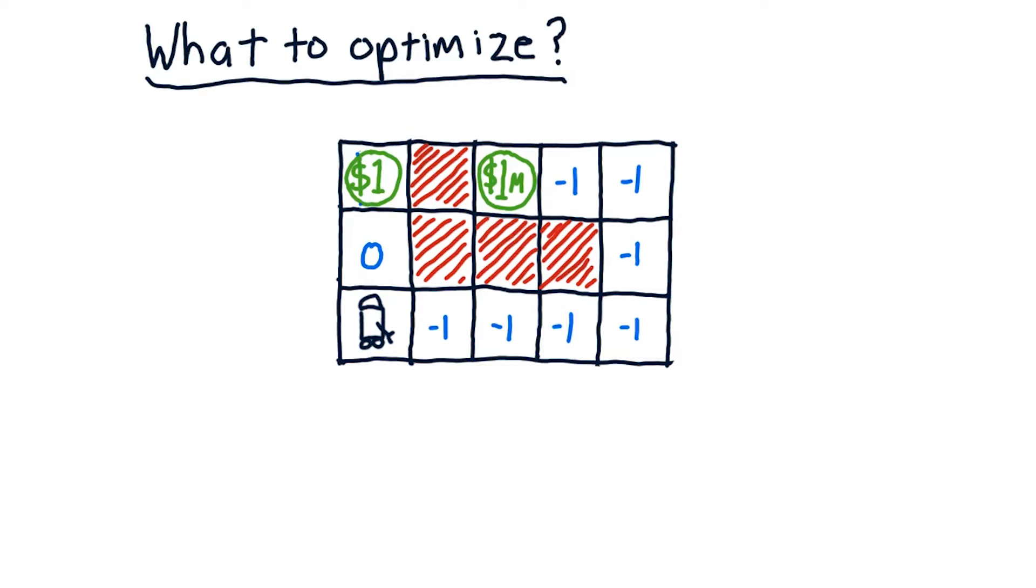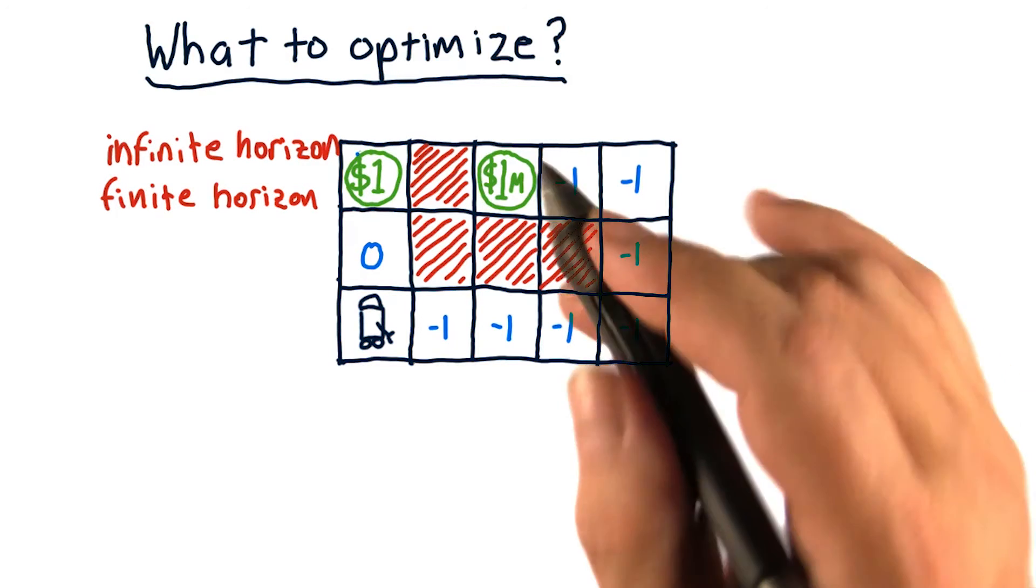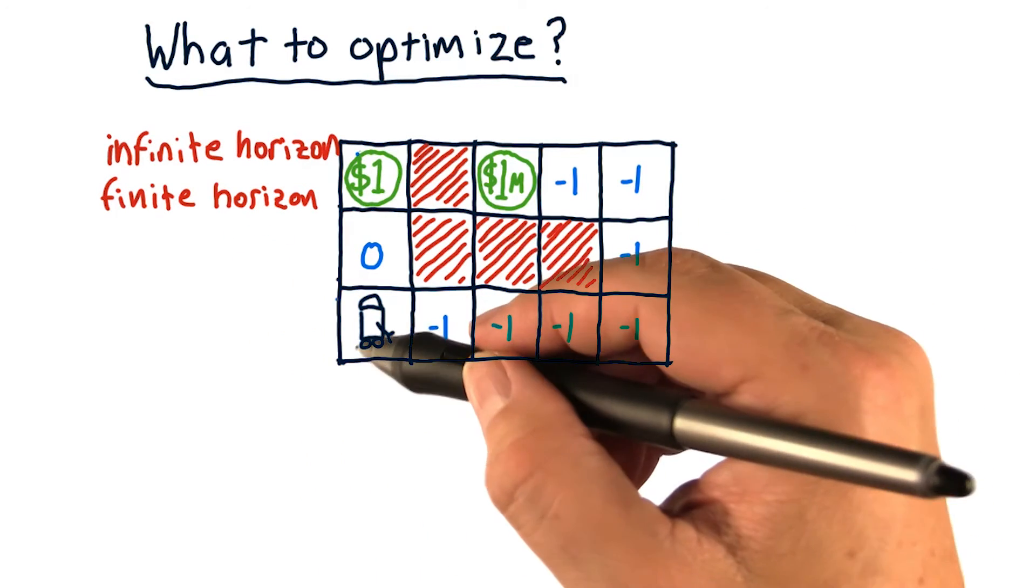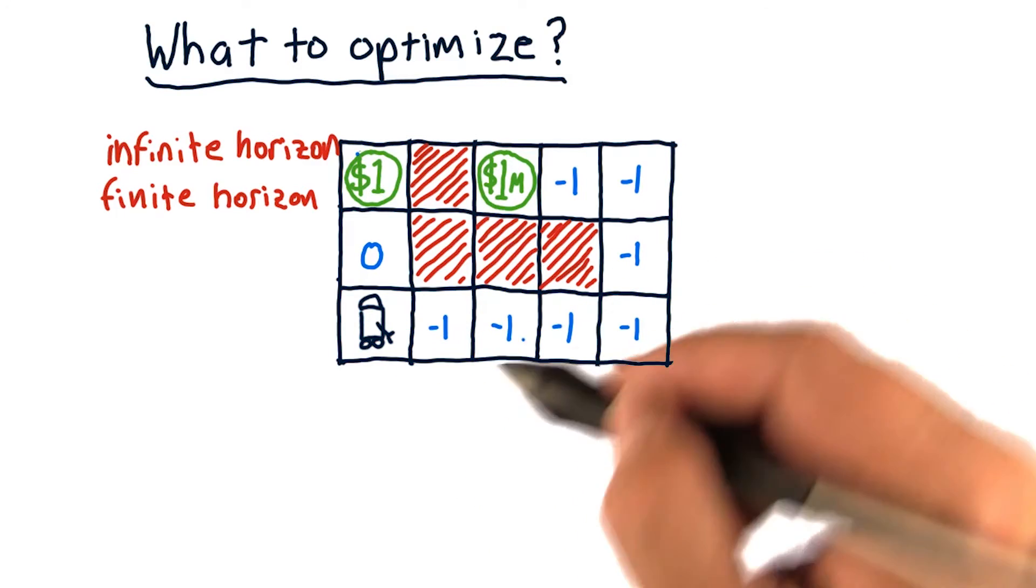Now what if we say, okay, I want to optimize my reward over three moves. So I've got a finite horizon. Let's consider the rewards we'd get with a finite horizon of three if we go this way versus this way.